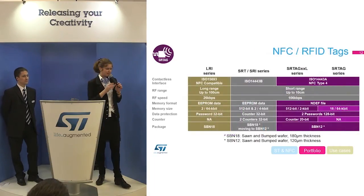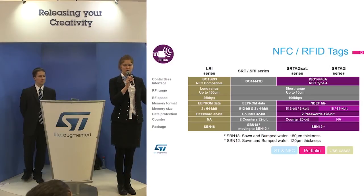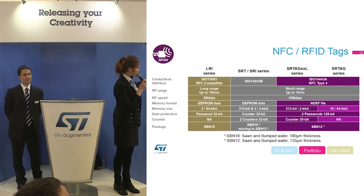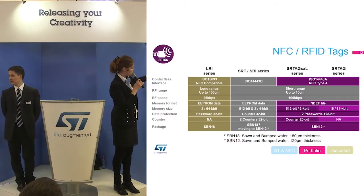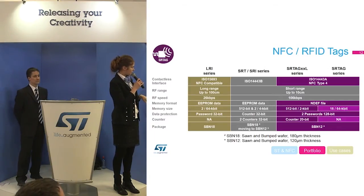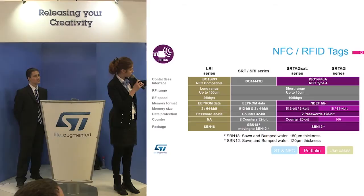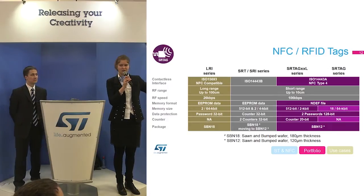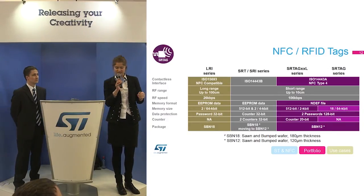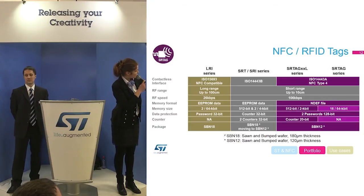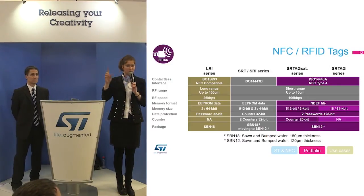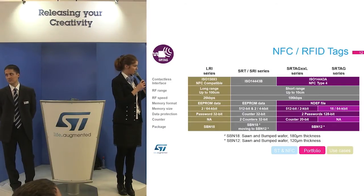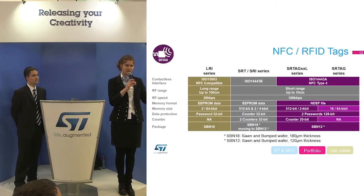Now let's look at the passive NFC and RFID tag portfolio. For NFC tags we have ISO 15693 with two memory sizes: 2K and 64K — good for industrial applications needing wide range. We also have the SRT and SRR series, used extensively in mass transit and ticketing. We have just released the SRTag 2KL series. For example, at our booth we are offering NFC business cards because with the largest memory for NFC tags, you can program your picture or logo inside the NFC tag.